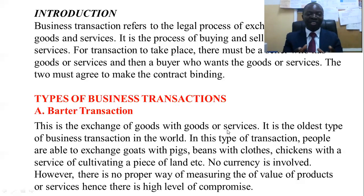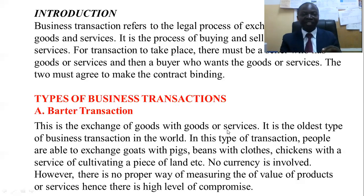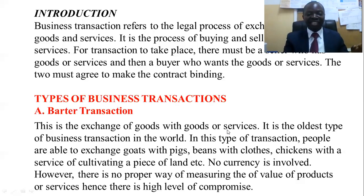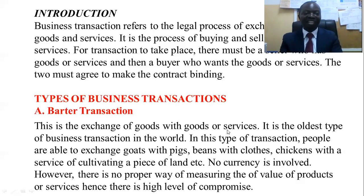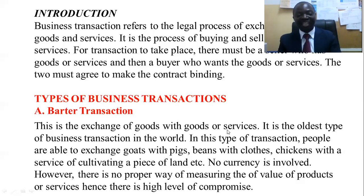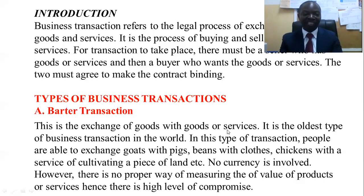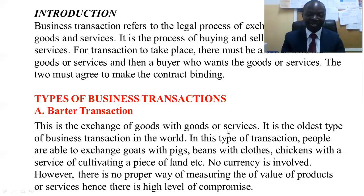However, the lack of a measure of value can disadvantage some people, because others may exploit those who have less valuable products. For example, people near a river or lake who don't have cooking oil may exchange a gallon of oil worth 20 kwacha for 10 big pieces of fresh fish that could be worth 200 kwacha in Lusaka. So measurability is not fair — no measure of value means exploitation is possible, and this is a significant disadvantage of barter transaction.